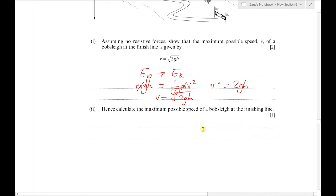Hence we've got to calculate the maximum possible speed at the finish line. We substitute the values: 2 times 9.81 multiplied by the 120 m drop, then take the square root of all that.